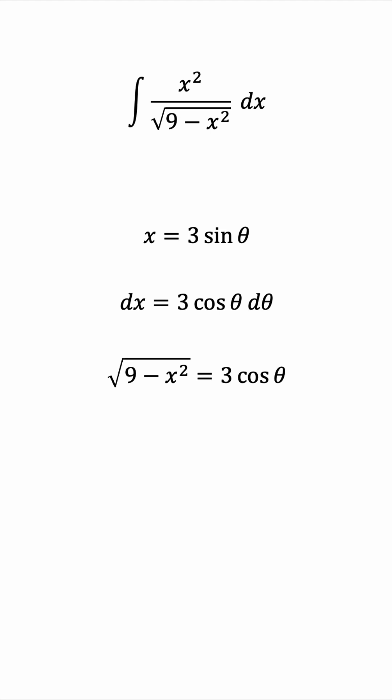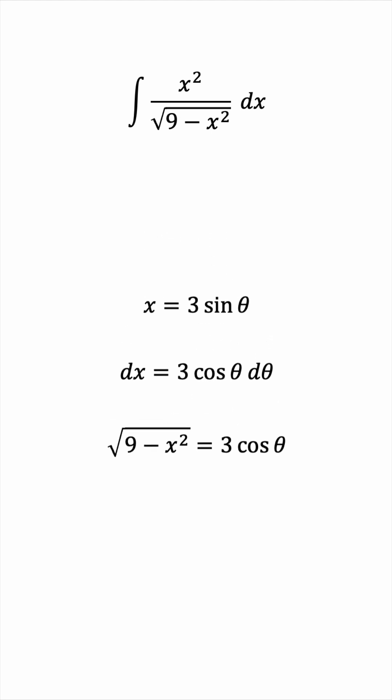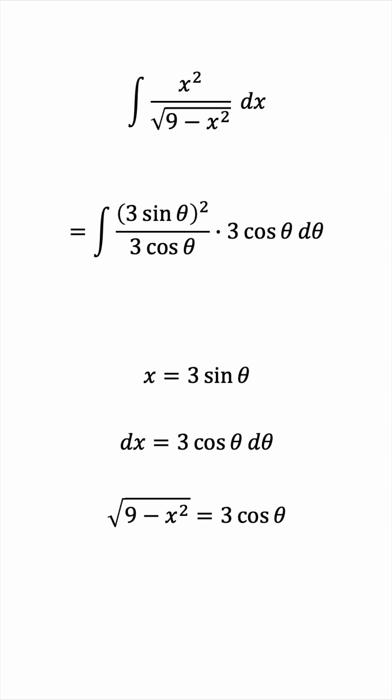We are now ready to write the integral purely in terms of theta. The integral becomes the following. Notice that 3 cosine theta cancels out, and the integral becomes 9 sine squared theta d theta.